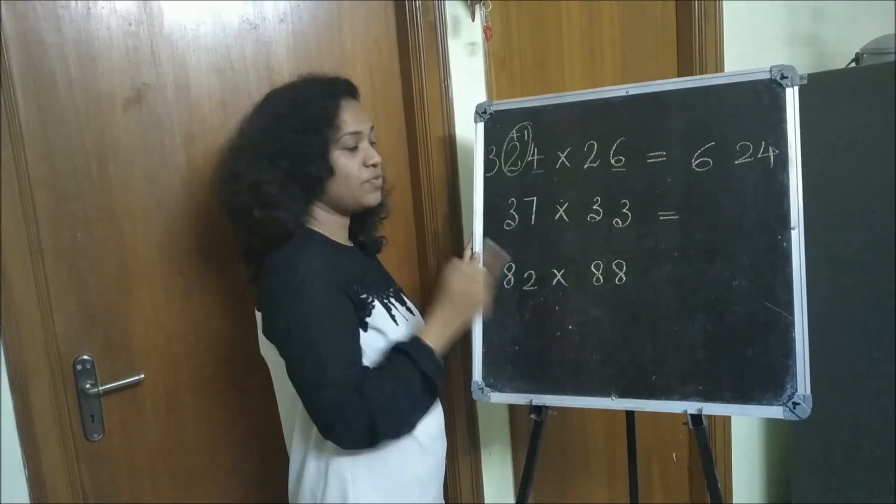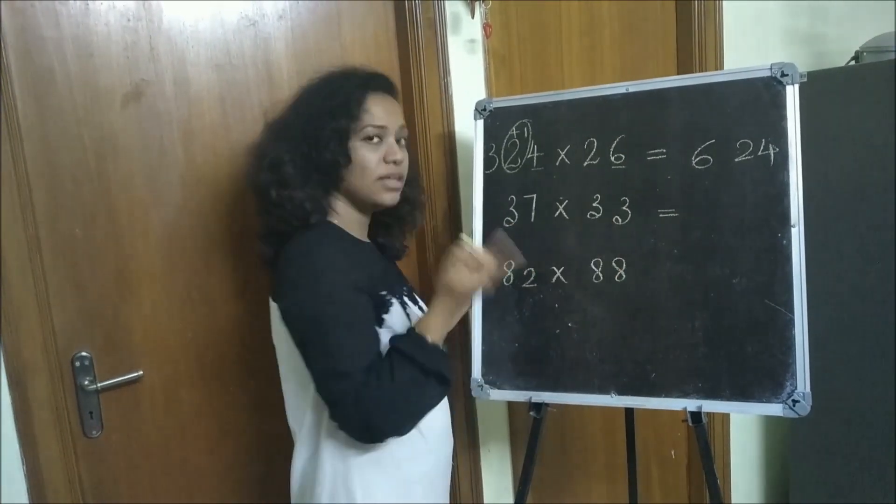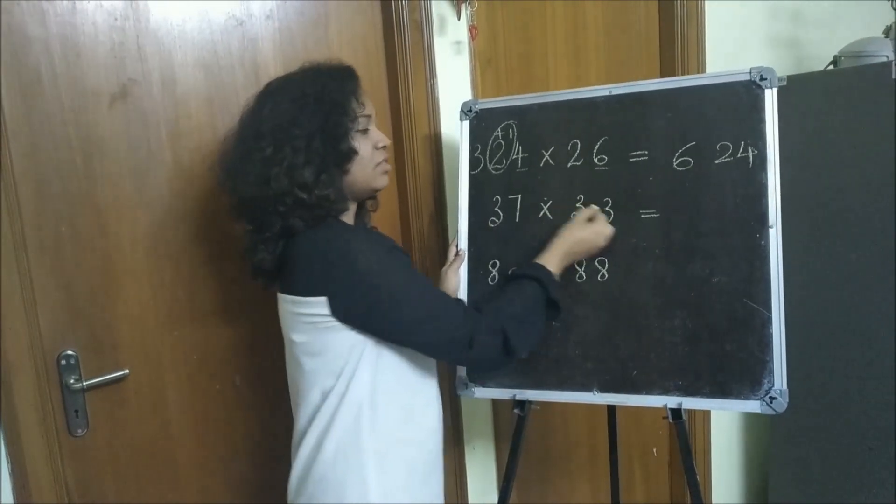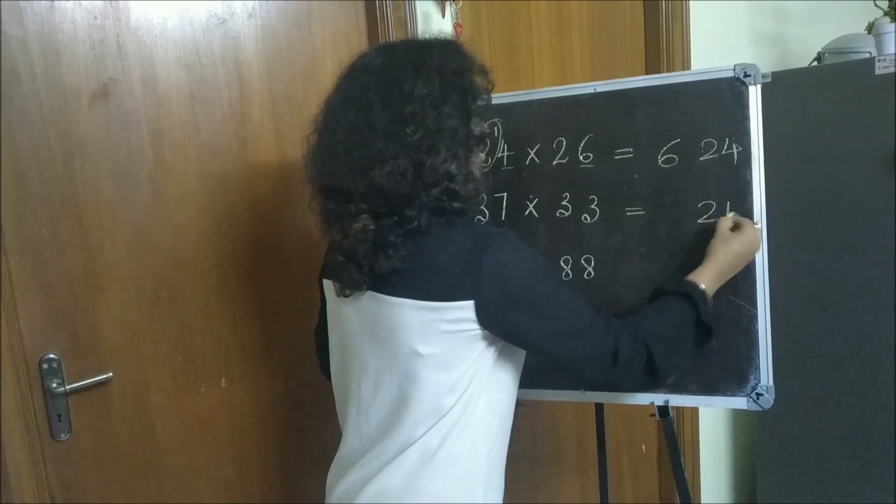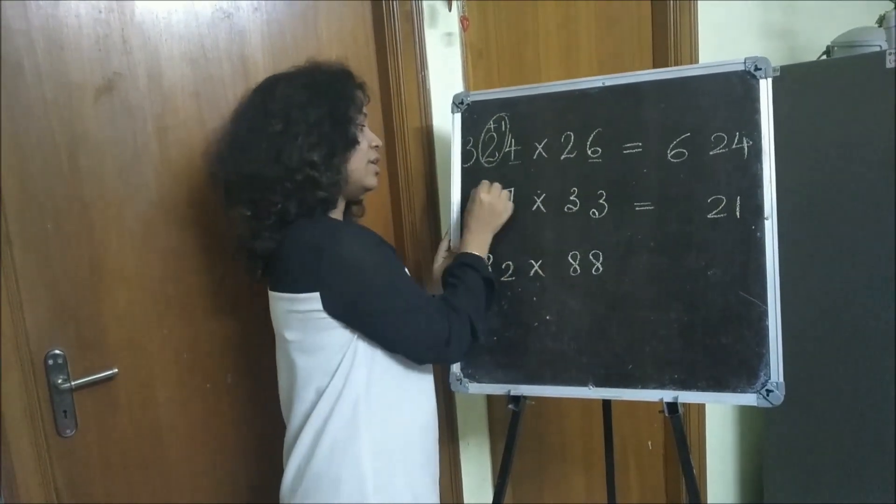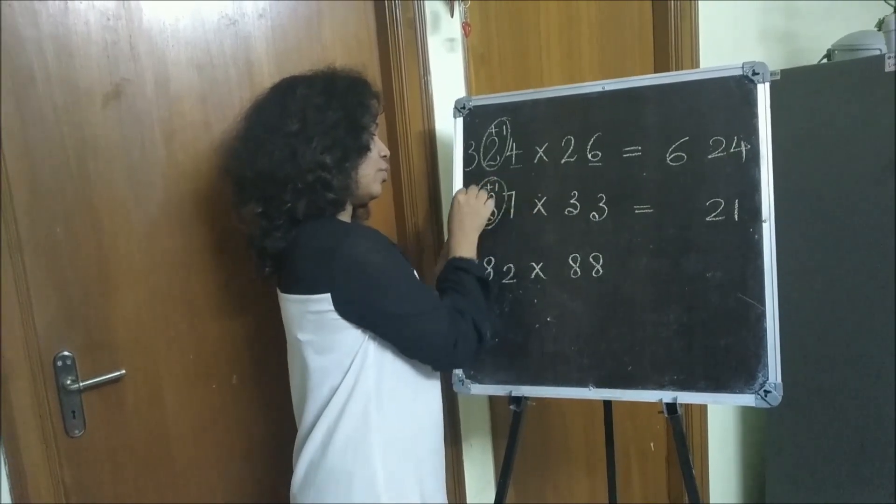Check the condition first. 7 plus 3 is equal to 10 and the other digits are the same. So 7 threes are 21 and 3 into not 3, 3 plus 1 is 4.